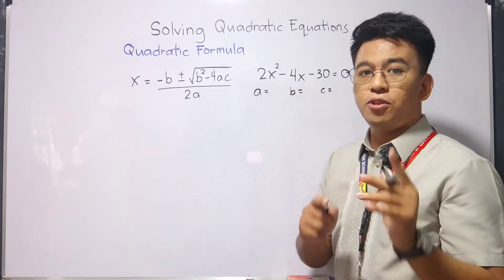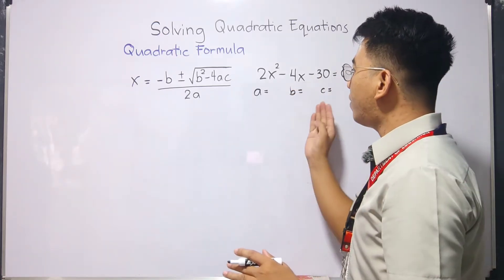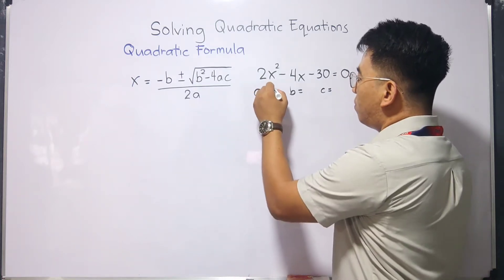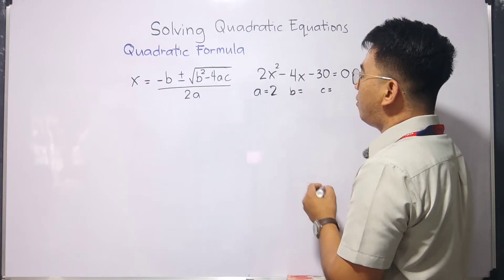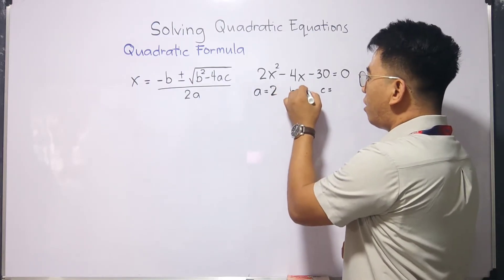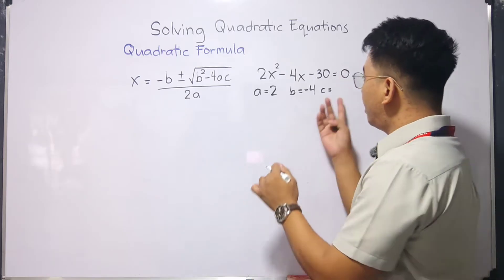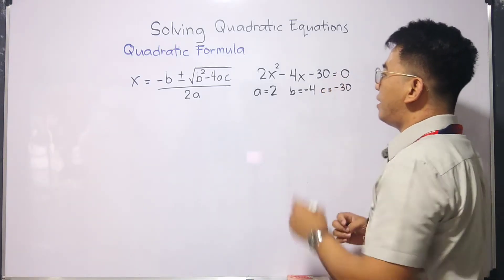Because we need to use this formula. In this equation, what is the value of a? The value of a is 2. The value of b is not 4. That is negative 4. The value of c is negative 30.